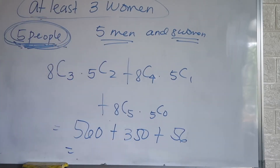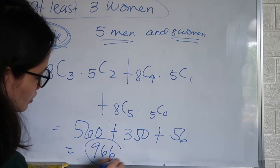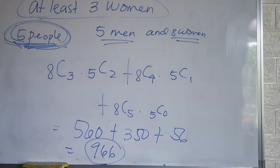Then you add everything: 560 plus 350 plus 56. You get 966. That's the answer: 966.